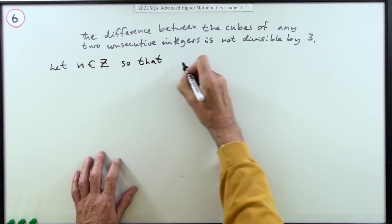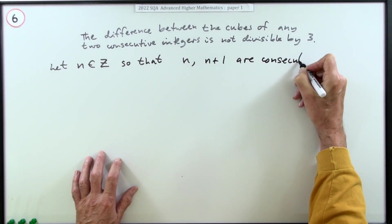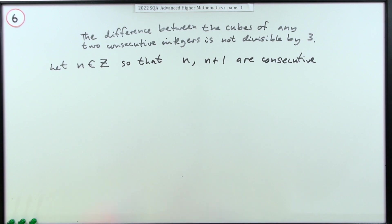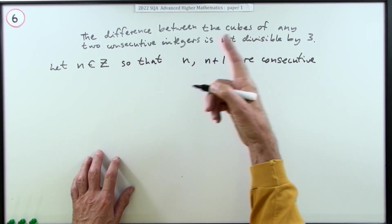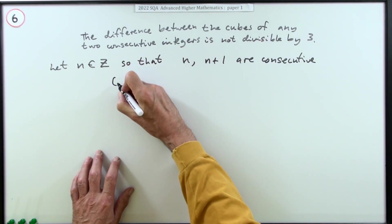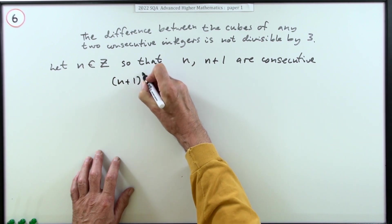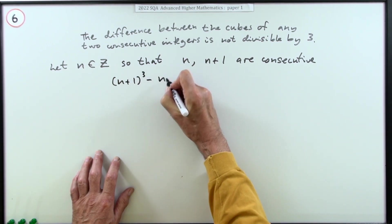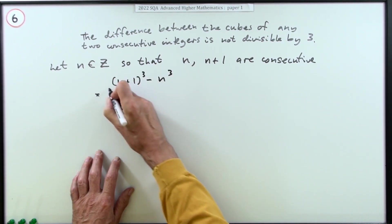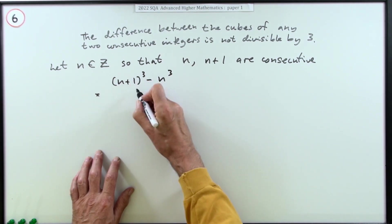Now just work with it. What does it say? The difference between the cubes of them. Well, n plus one is the larger, so n plus one cubed minus n cubed. That's a binomial expansion. You should know the coefficients for that binomial expansion of power three: one, three, three, one.